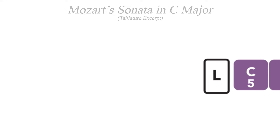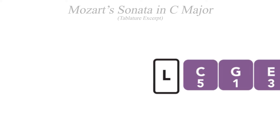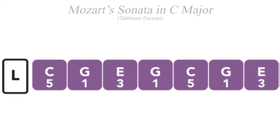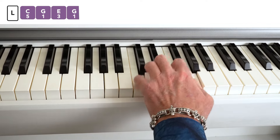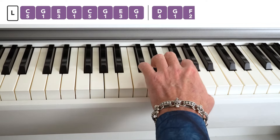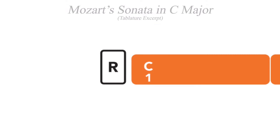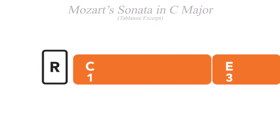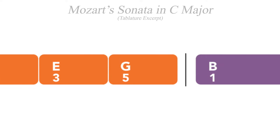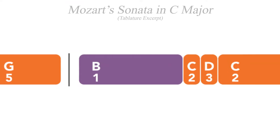Now let's take a look at Mozart's Sonata in C major. The notes of the left hand are all of the same width, meaning they should be played with steady, even timing. In order to convey the phrasing of the melody, the right hand is constructed with both wide and narrow tiles.